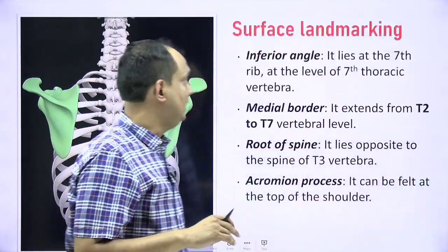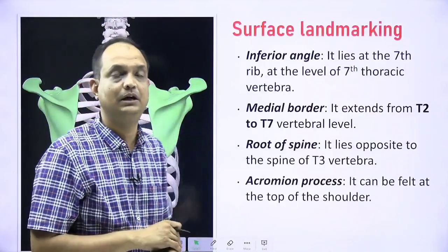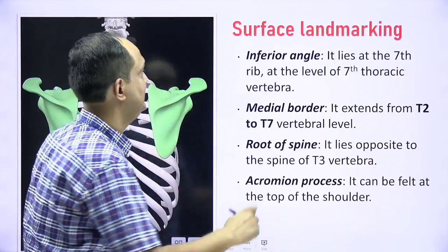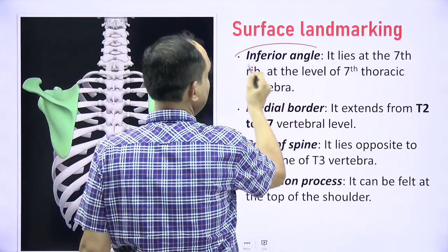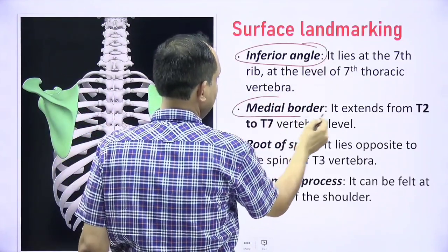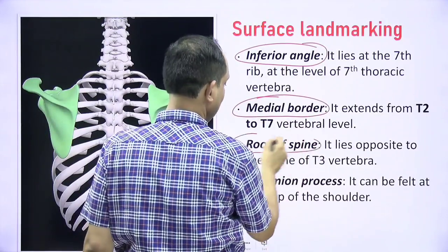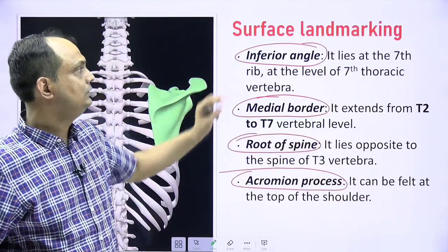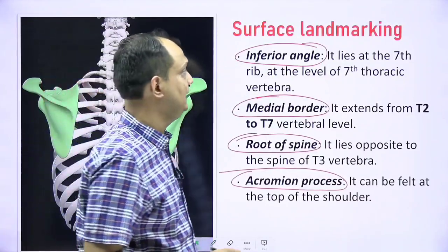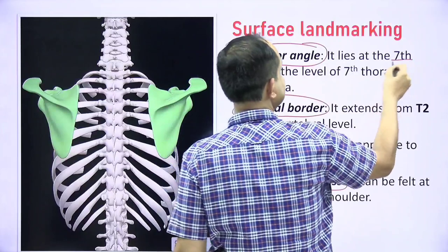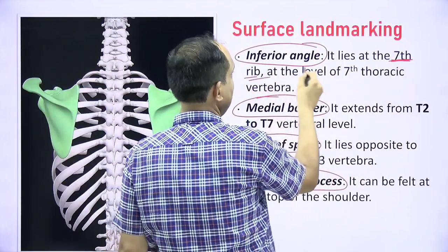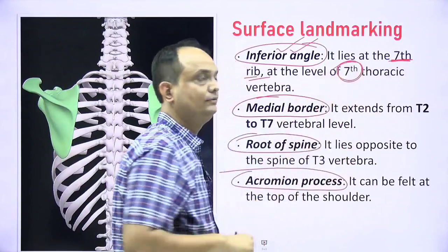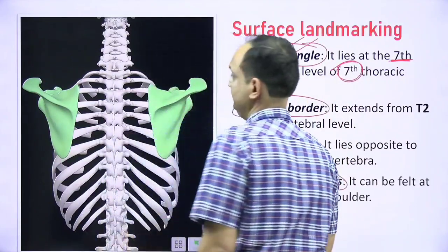Now the surface landmarks of the scapula. When you see the dorsum — the back — you can palpate the inferior angle, medial border, root of spine, and acromion process of scapula. The inferior angle of the scapula lies at the 7th rib, and if you are palpating the inferior angle, you are at the level of the 7th thoracic vertebral spine.